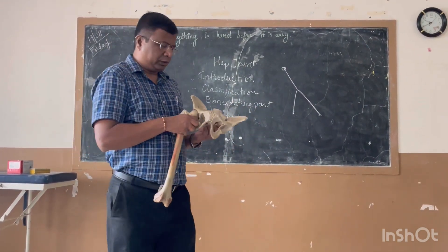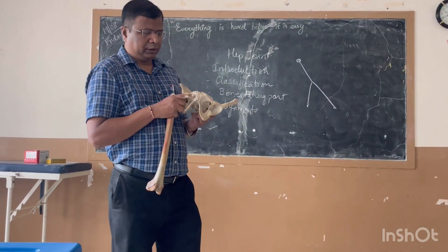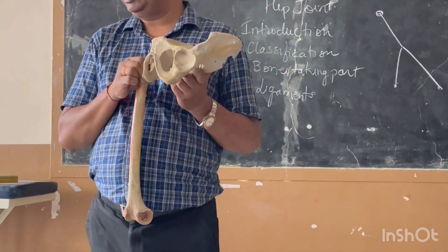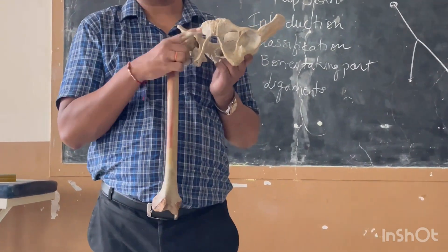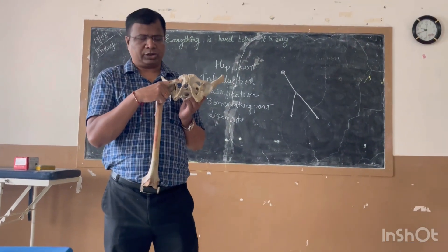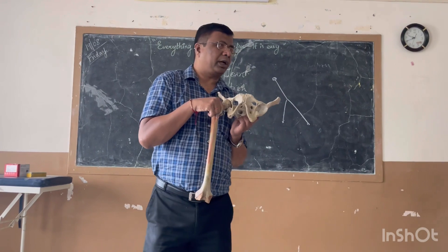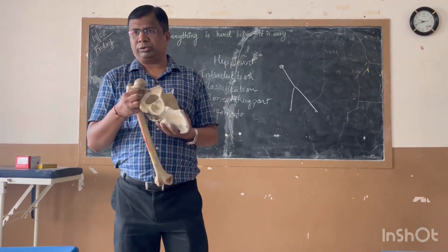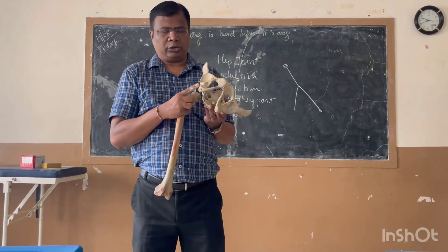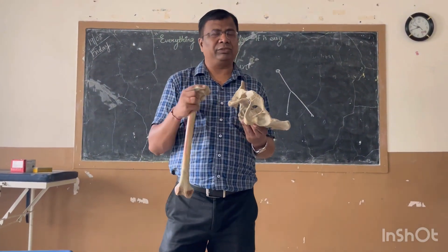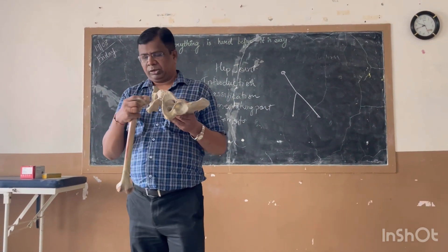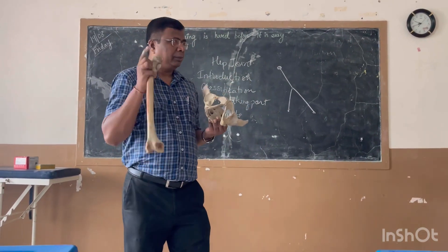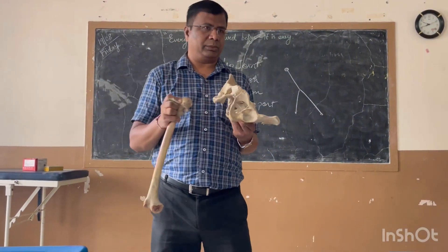The next ligament is the pubofemoral ligament, which is not as strong as the iliofemoral ligament. It arises from the anterior surface of the body of the pubis and merges with the inferior band of the iliofemoral ligament, providing antero-inferior support. The third ligament is the ischofemoral ligament, which starts from the ischium and goes to the acetabulum — it is not directly attached to the femur, despite its name. It is a weak ligament supporting the joint postero-inferiorly. A key point to remember is that there is no femoral attachment for the ischofemoral ligament.